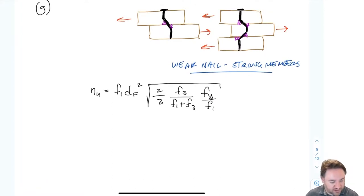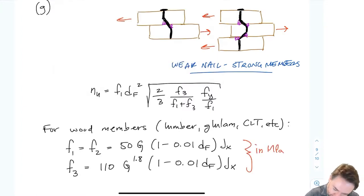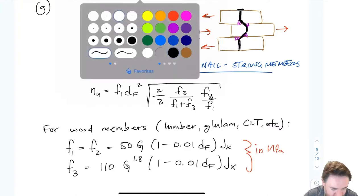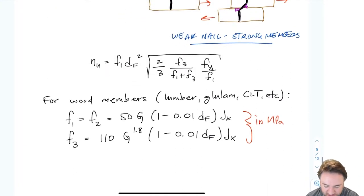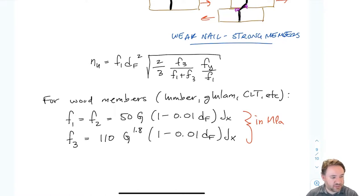Now we need to know how to calculate the embedment strengths. For wood members we have equations for F1 and F2, which are the regular embedment strength, and F3, which is the embedment strength for a yielding nail pulling through a member. F3 is more than twice as large as F1 and F2 to account for the string/rope effect. The embedment strength is inversely proportional to the size of the fastener — the larger the fastener, the lower the embedment strength. There's also a term jx and parameter G.